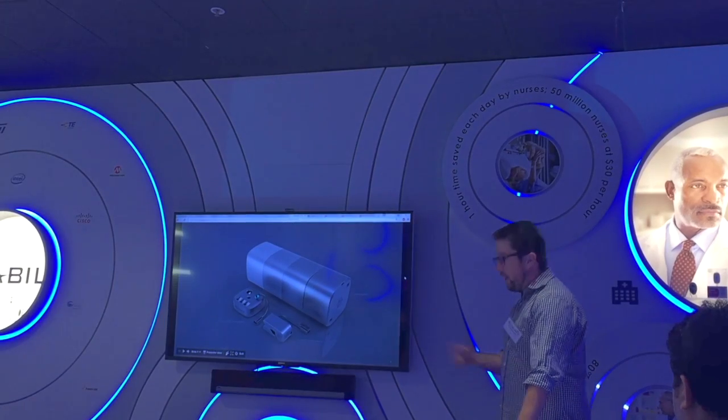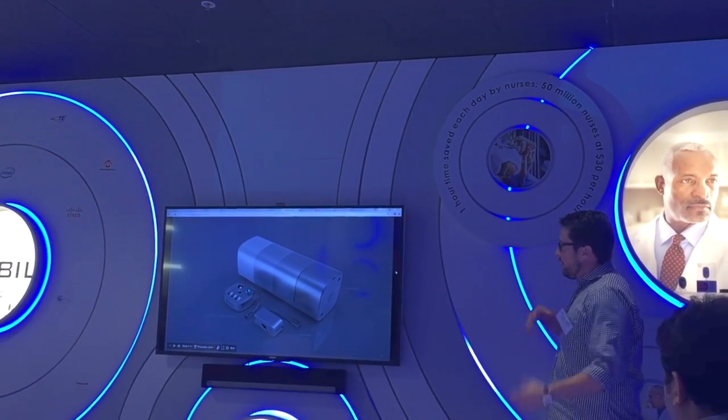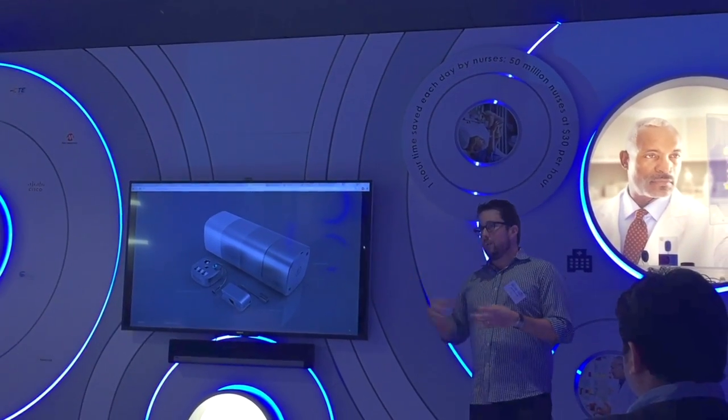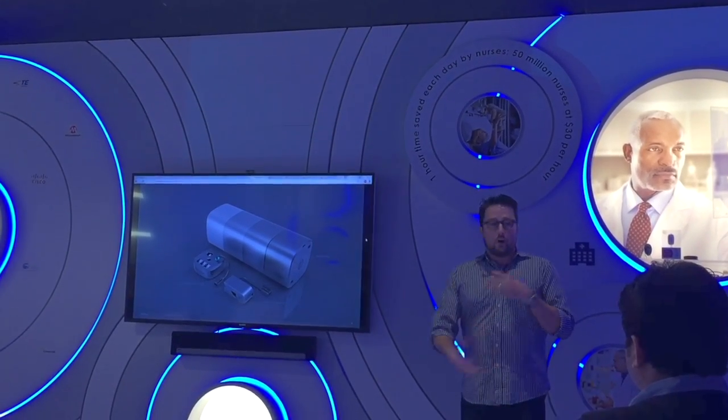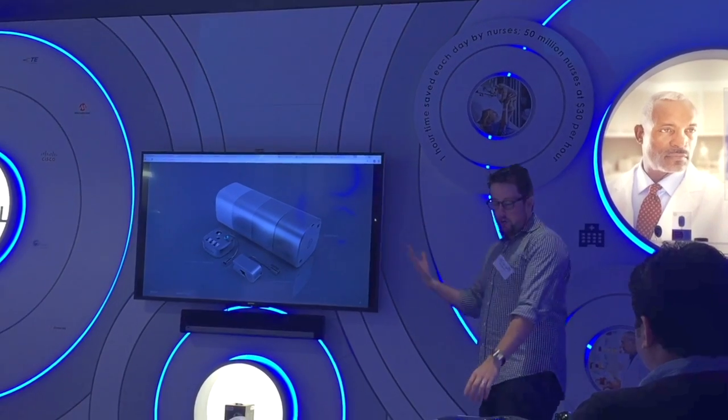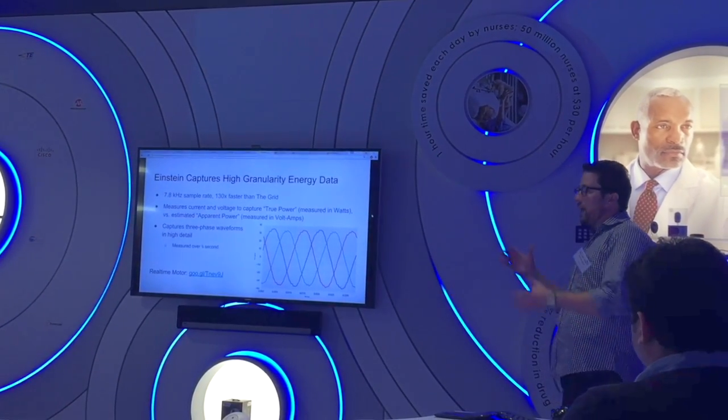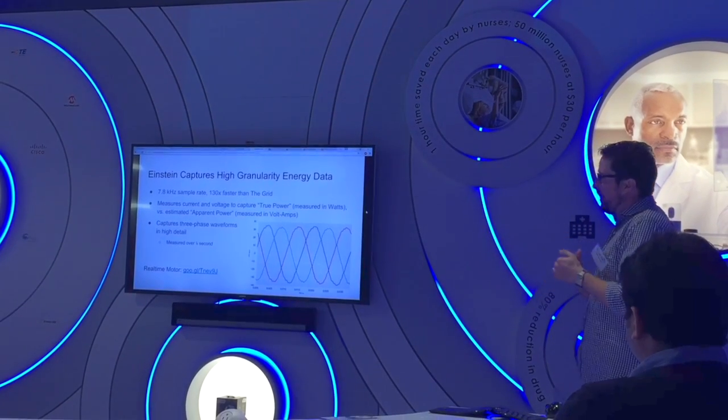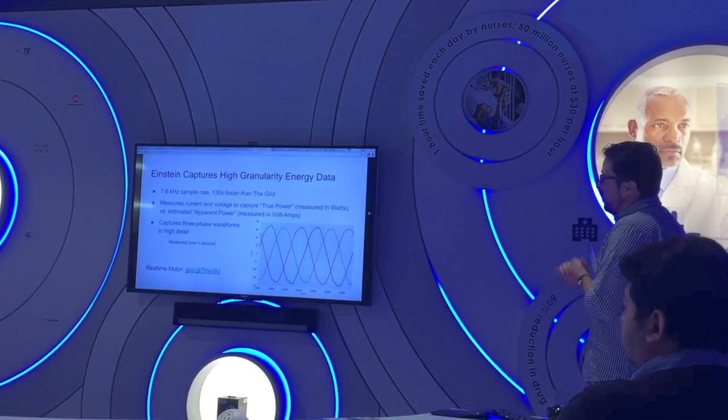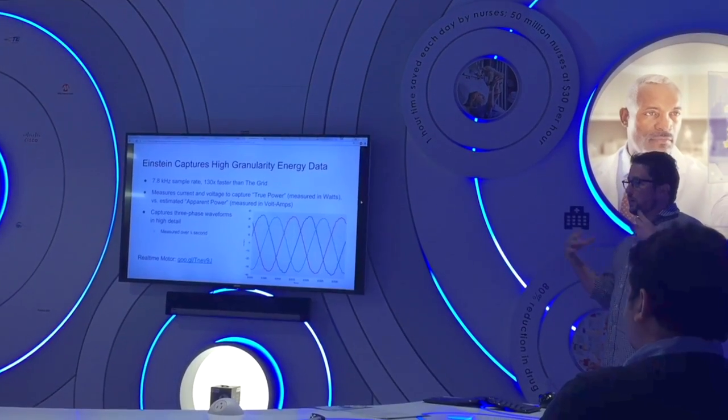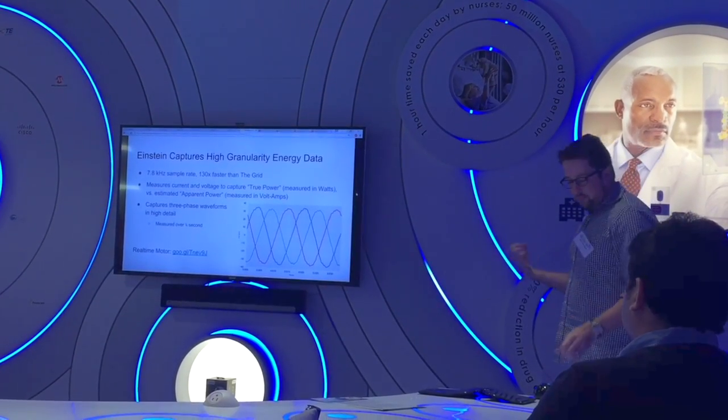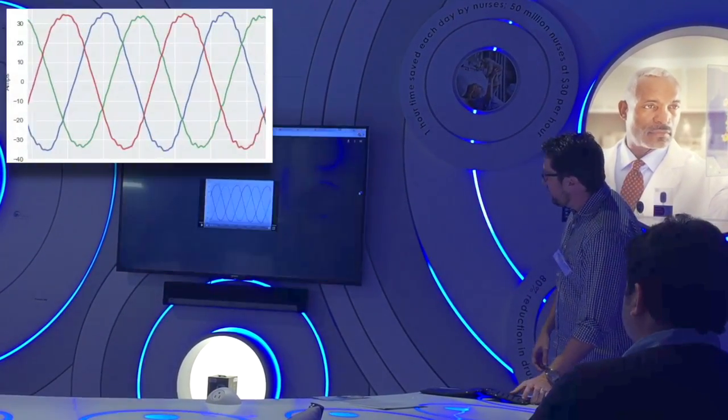I'm going to talk a little bit about what happens behind the scenes, because I think what's really interesting about Einstein, about this technology, is really what the artificial intelligence is doing to generate these notifications. We're capturing really high granularity energy data. There's some tech stacks on here that you know, essentially the message is it's much faster than the grid, and so we're pulling really rich data out of the building.